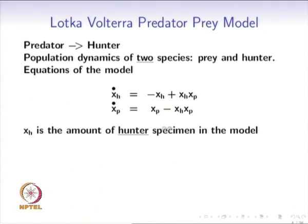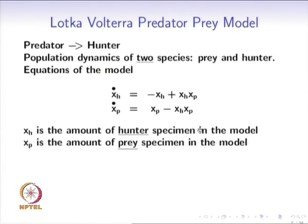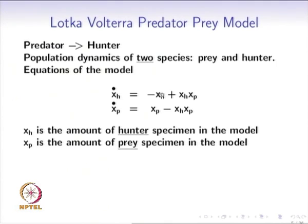Let xh be the hunter specimen in the model and let xp be the prey specimen in the model. The equation says x-dot-h equals minus xh plus a quantity that depends on both xh and xp, and x-dot-p equals xp minus xh*xp. The first term in each equation describes how the particular species would evolve if there were no other species. The first equation says that if there were no prey, xh would decrease exponentially because there is no food.